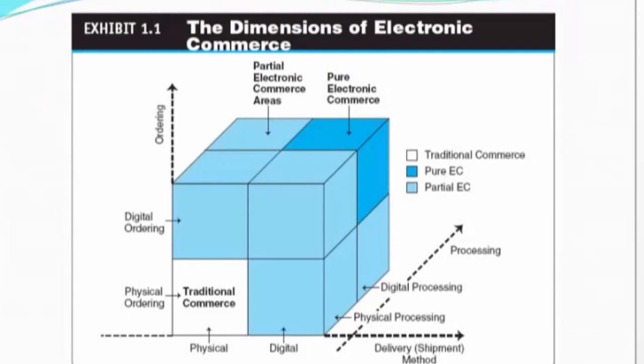We're talking about the dimensions of electronic commerce. Just as I explained, there is a spectrum — draw a straight line on an X-axis. On the left side is pure play, on the right side is brick and mortar, and in between there are levels. The closer a company is to pure play, the more integration it has of internet technologies.